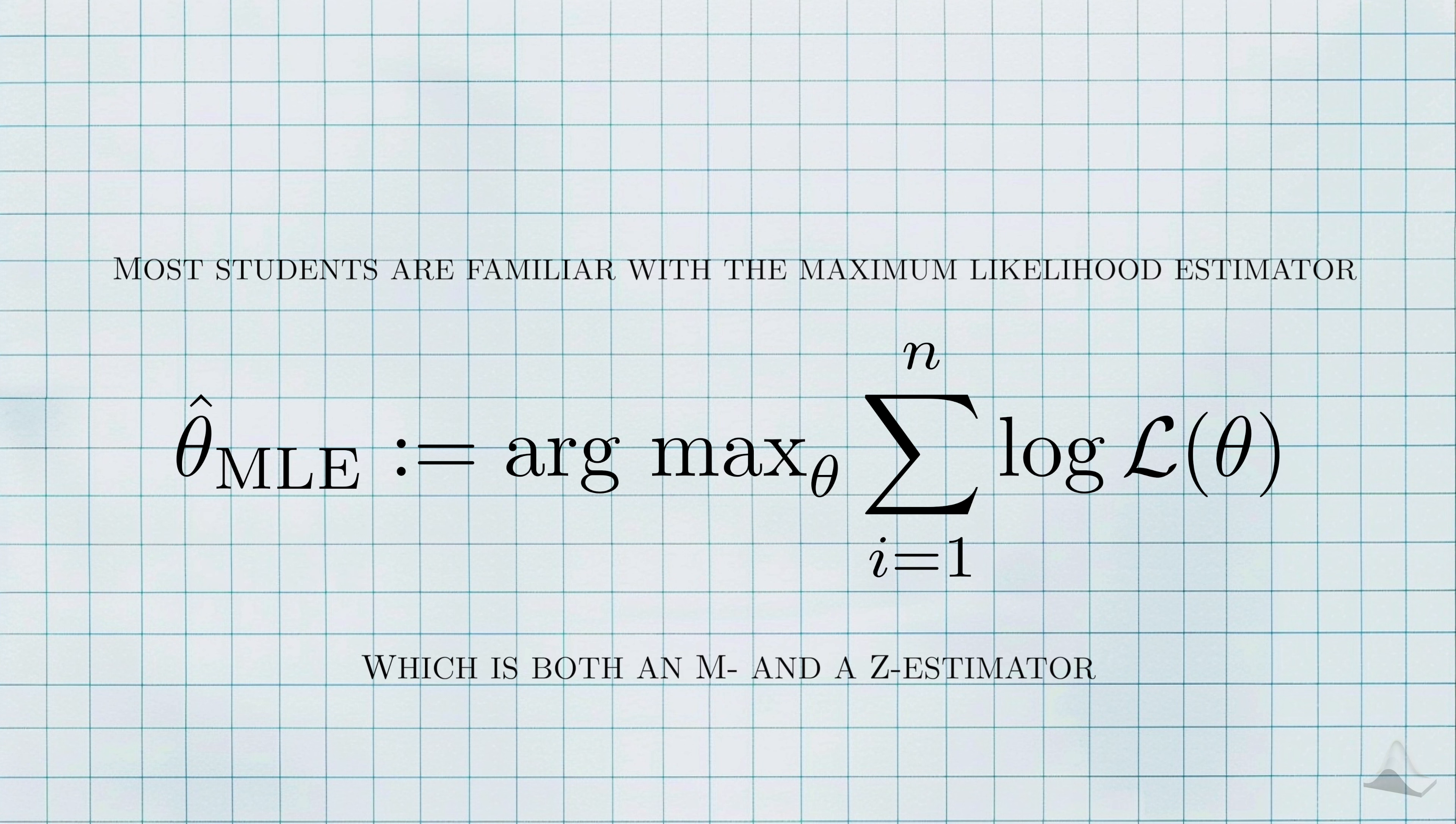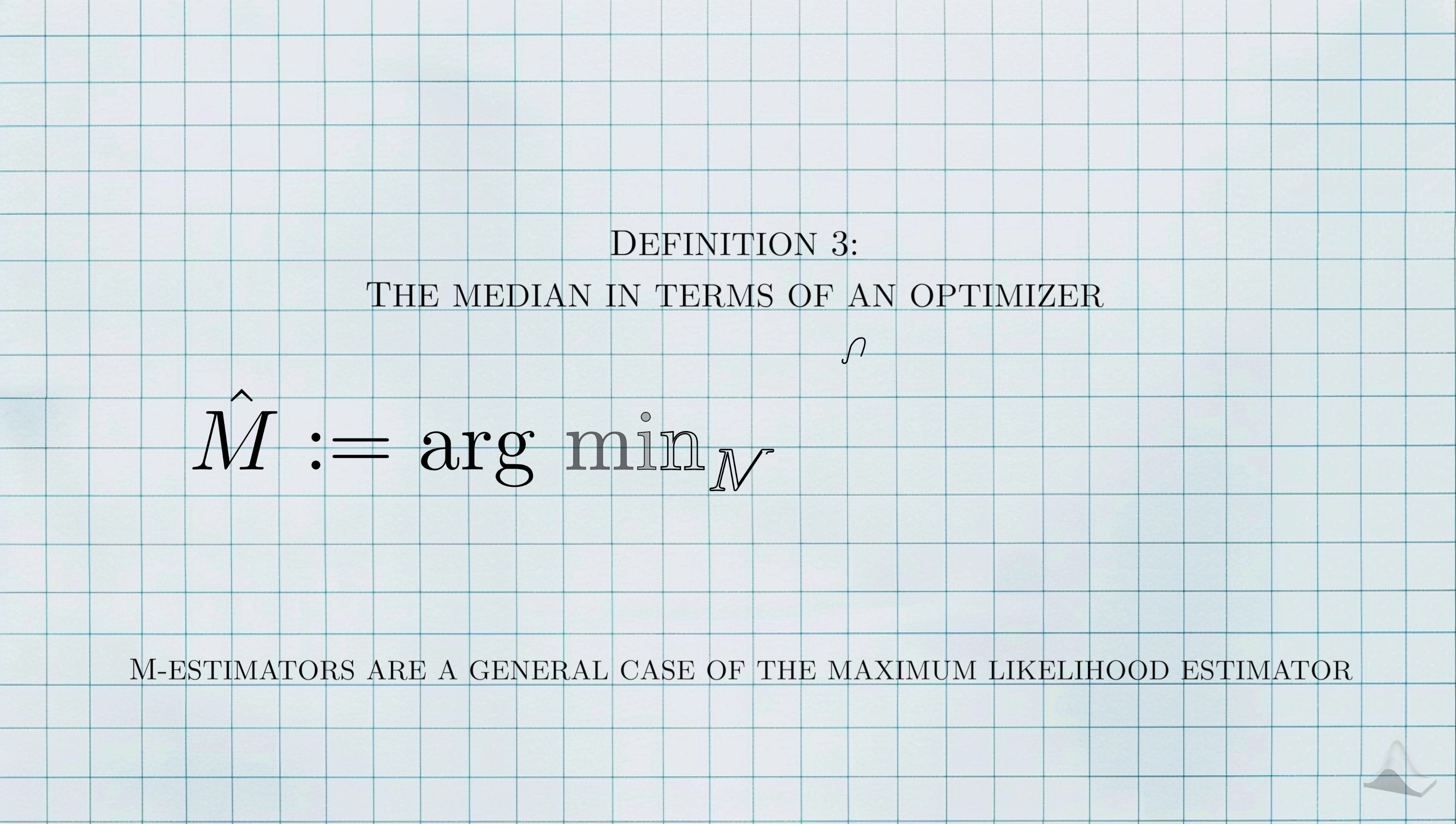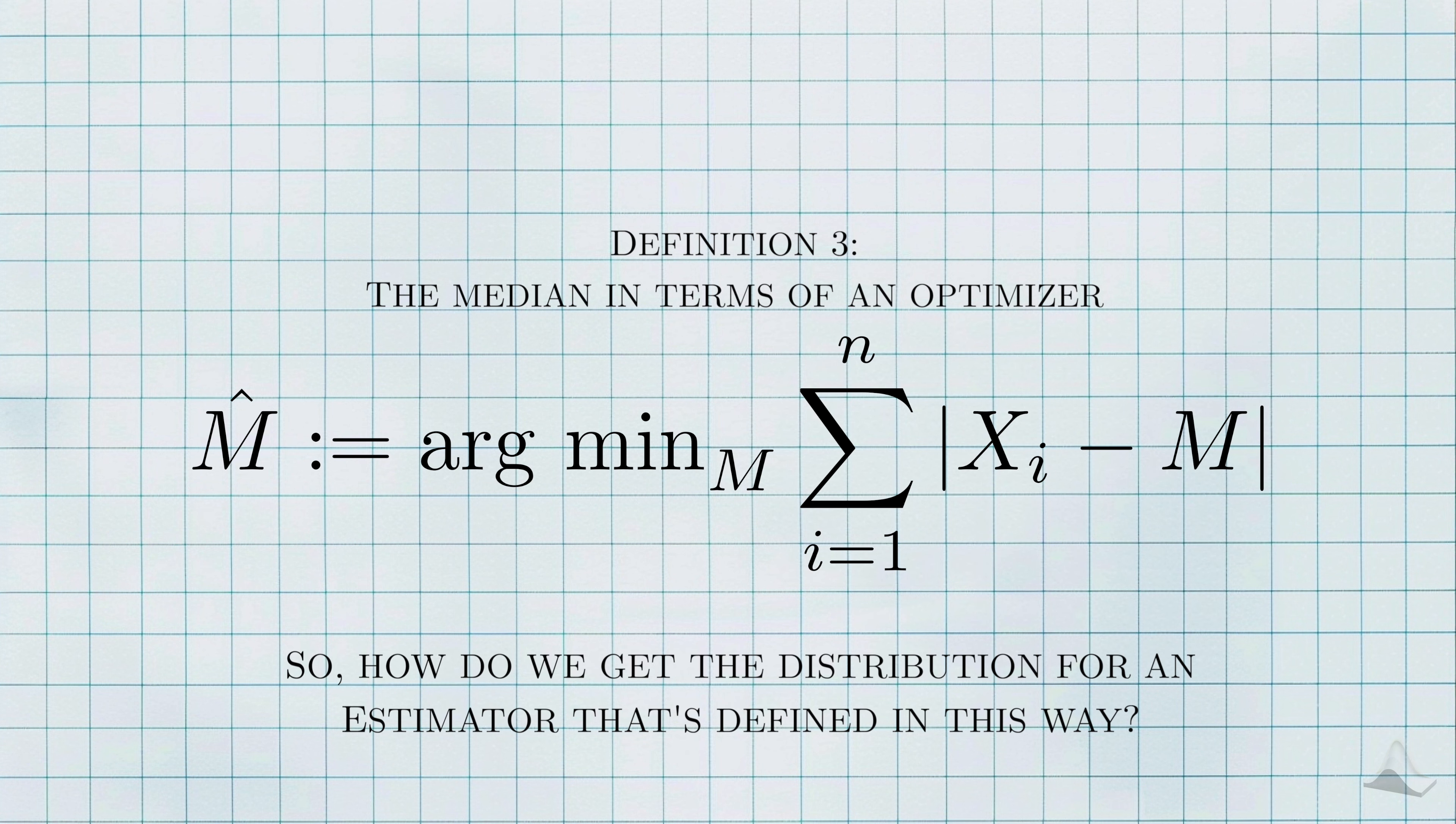Most statistic students would be familiar with the famous maximum likelihood estimator, which is both an M and a Z-estimator. The idea here is that you're defining the estimator as having a particular quality, as opposed to it having a closed-form solution based on the data. You can think of M-estimators as a more general case of the maximum likelihood estimators. Instead of maximizing the likelihood or log likelihood, which has some nice properties, we can also get estimators by maximizing or finding solutions to more general functions that we might not be able to necessarily differentiate.